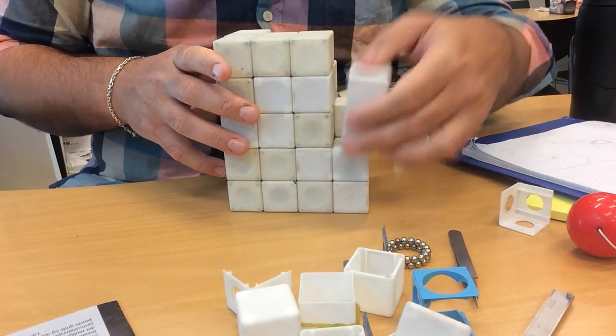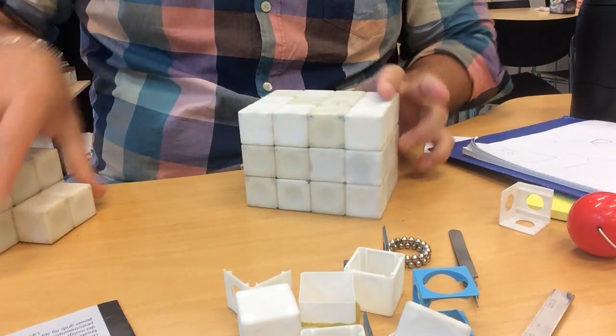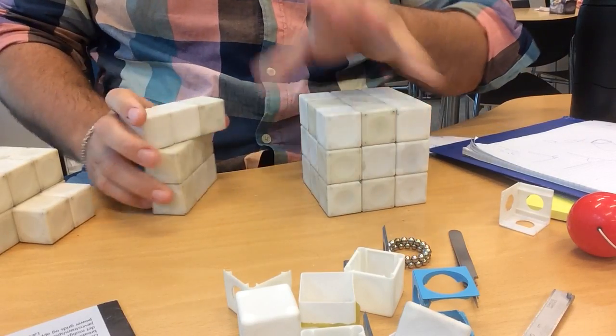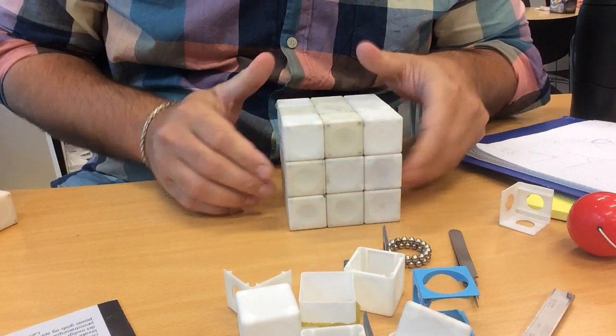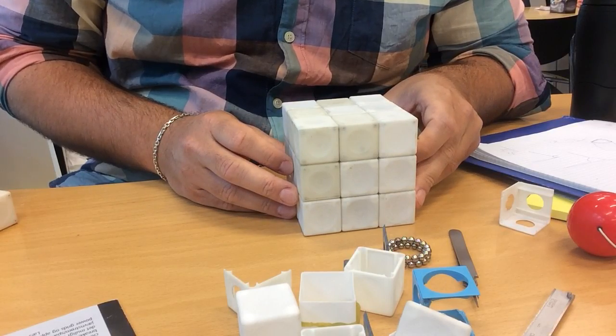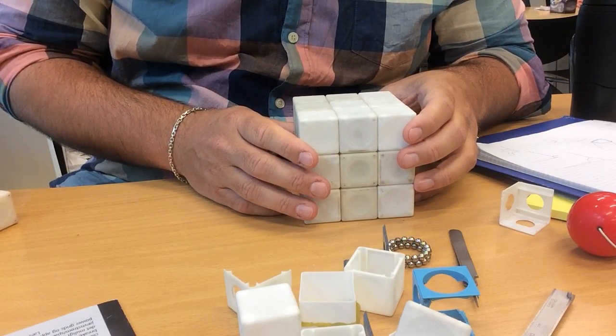So to keep things, let's call it simple, let's go down to 27 cubes as the original question was about. So how many different ways can we connect these qubits to each other? Thank you.